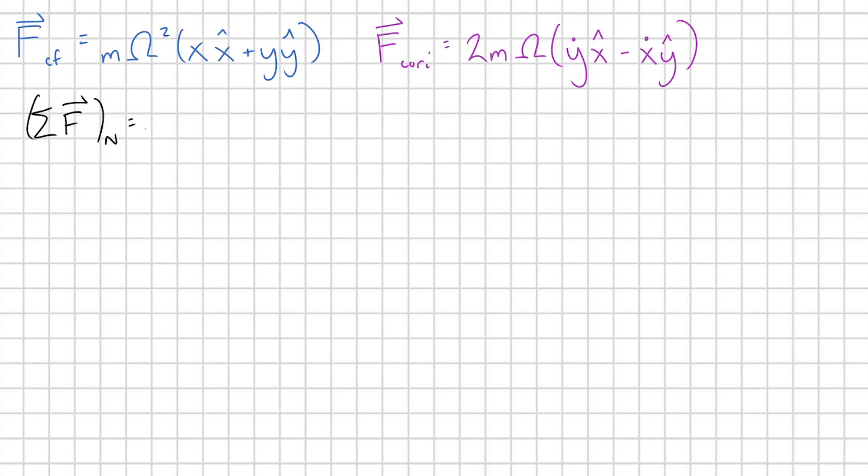Alright, so then from here, everything's more or less going to play out just like Newton's second law. We're going to take these fictitious forces now, and we know there aren't any other forces on the disk, so it's just the fictitious forces, and we're going to set that equal to M A, which in Cartesian coordinates is going to look like x double dot x-hat plus y double dot y-hat.